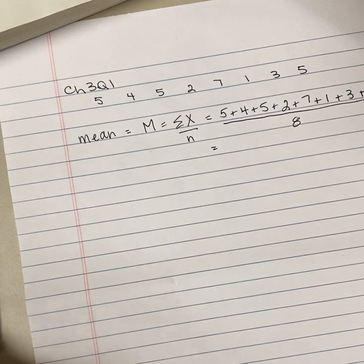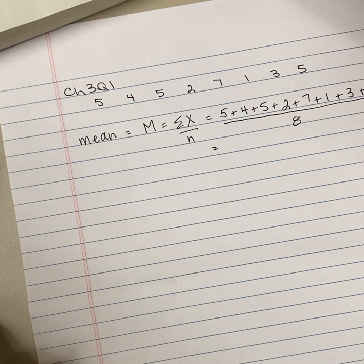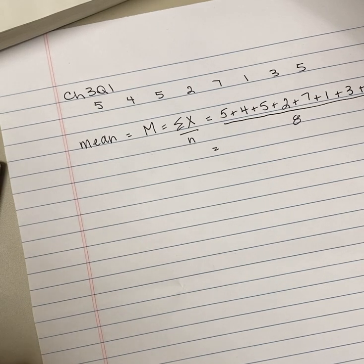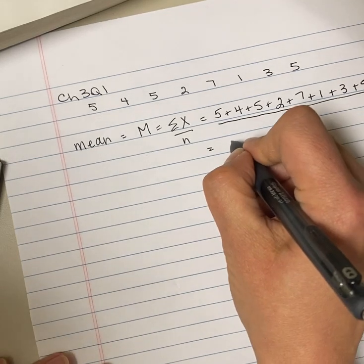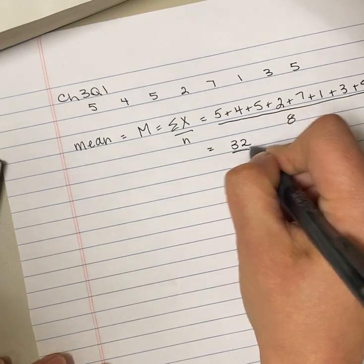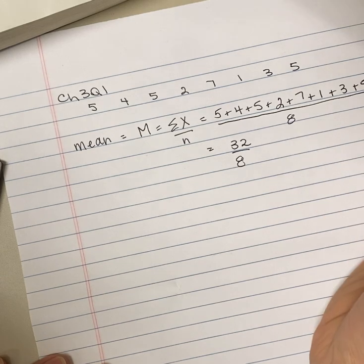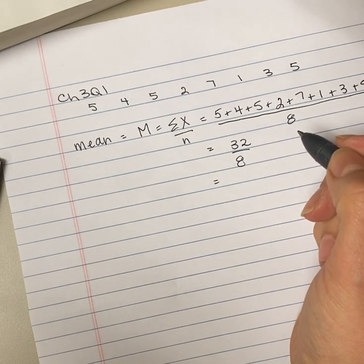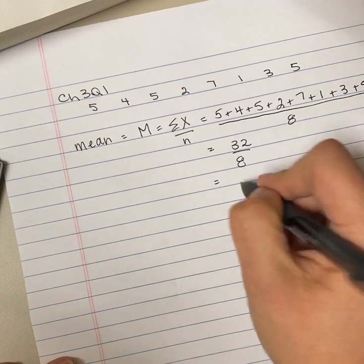In the numerator, when we add up those values, 5 plus 4 plus 5 plus 2 plus 7 plus 1 plus 3 plus 5, I get 32. And I divide by the number of scores I have, which was 8. So if I divide 32 divided by 8, what I get is 4.